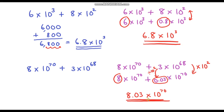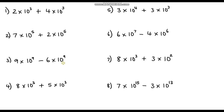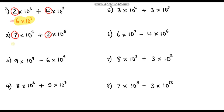Now here are 8 questions for you to have a go at — pause the video and try them. Be careful, there are some subtractions in there too, and make sure your answer is in standard form. Question 1: 2 times 10 to the power 3 plus 4 times 10 to the power 3. The powers of 10 are exactly the same, so just add the base numbers: 2 plus 4 is 6. Answer: 6 times 10 to the power 3. Question 2: 7 times 10 to the power 5 plus 2 times 10 to the power 5. Again same powers — 7 plus 2 is 9 — so 9 times 10 to the power 5.